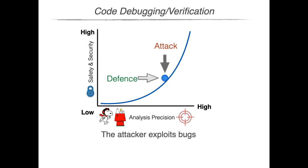The typical scenario of program analysis is code debugging and verification, and researchers have put great effort in developing efficient analysis techniques and tools to reduce the number of false positives for static analysis and false negatives for dynamic analysis. In code debugging and program verification, we want the analysis to be as precise as possible in order to detect bugs, vulnerabilities, or unexpected behaviors. In this sense, the precision of the analysis is related to the security of the code.